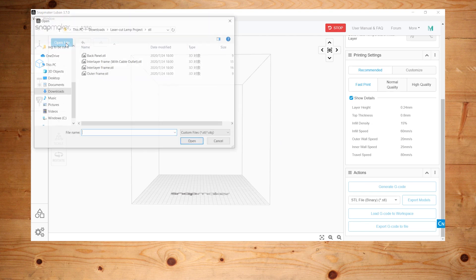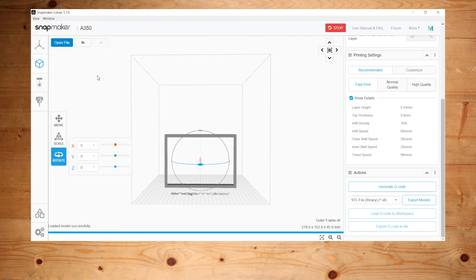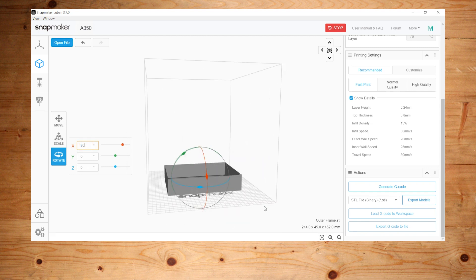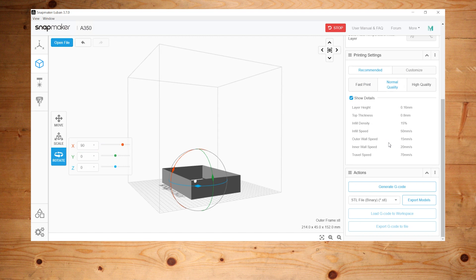Import the STL files into Snapmaker Luban. Adjust the direction of the model to make it lay down on the platform. For the parameter setting, let's just select the normal mode.